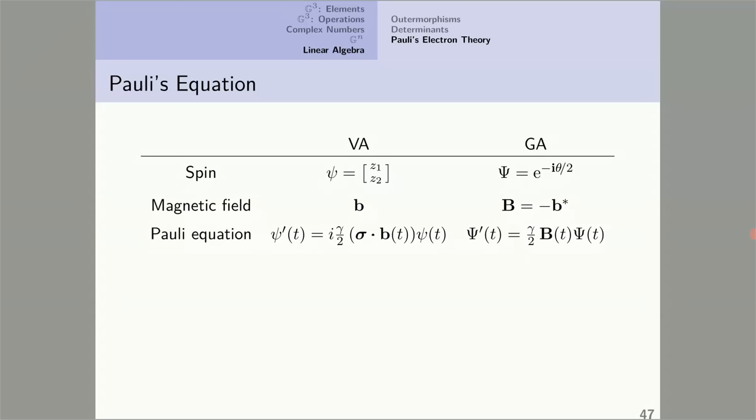And here are the two versions of Pauli's equation. The vector algebra version: in the vector algebra version, none of psi, sigma, or the complex number i live in three dimensions. The vector b does. On the other hand, in the geometric algebra version, everything lives in 3D.